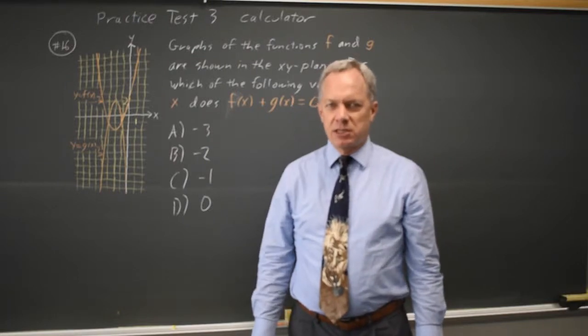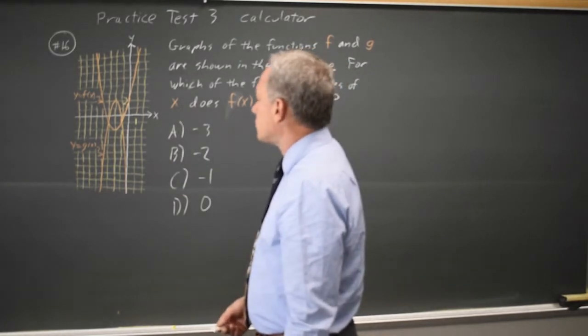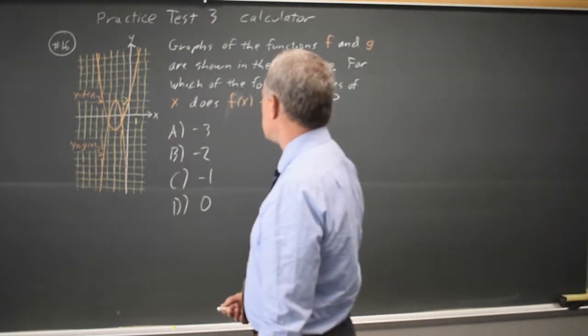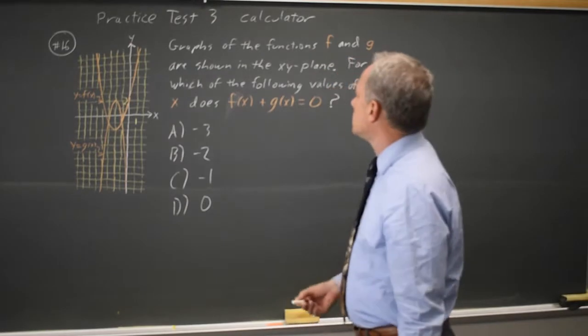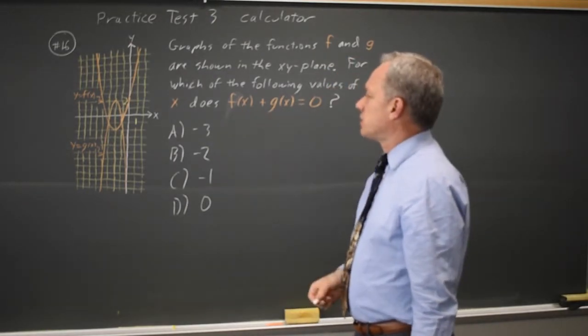This is calculator question number 16. College Board gives us a graph of two functions that look more or less like parabolas, and they ask for which of the following values of x does f of x plus g of x equals 0.